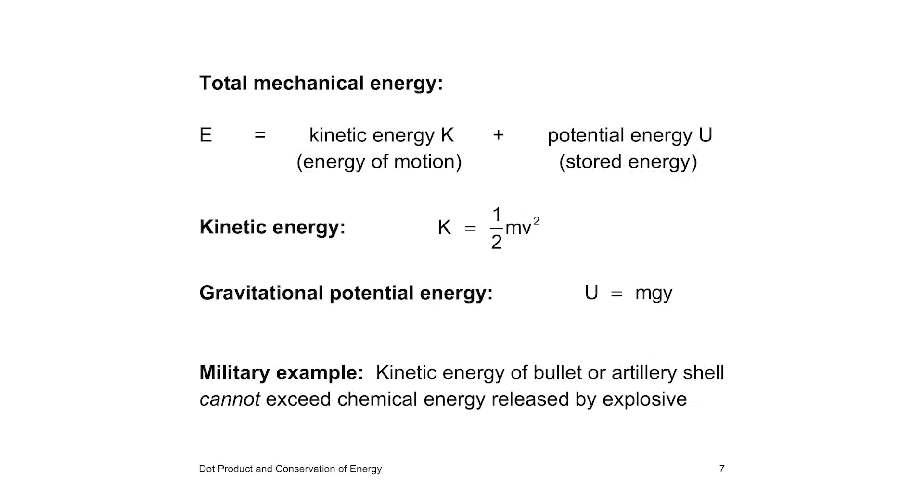In mechanics, the energy is the sum of the kinetic and potential energies. Kinetic energy is the energy of motion. A mass m with velocity v has kinetic energy one half mv squared. Potential energy can be considered as stored energy due to changes in the configuration of the system. This energy exists in many forms. Gravitational potential energy is mgy, where g is the acceleration due to gravity and y is the vertical position.